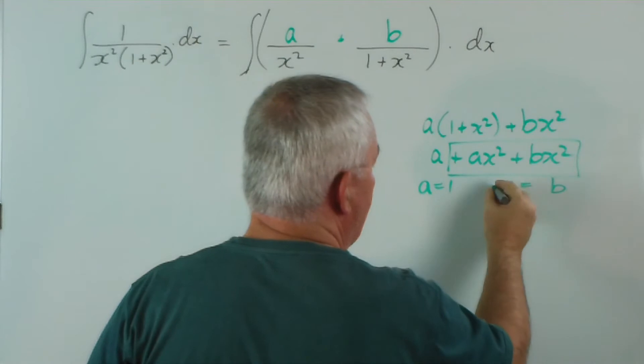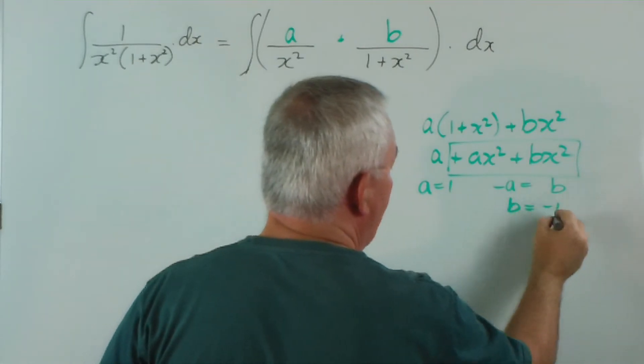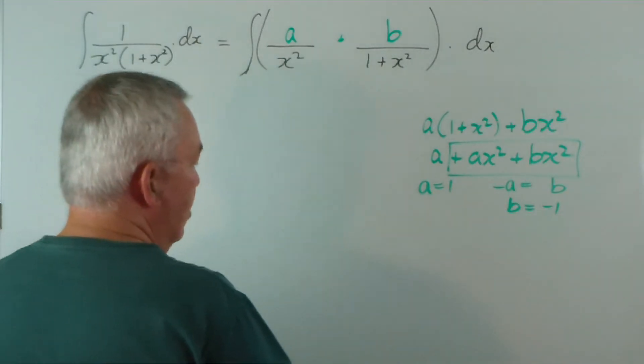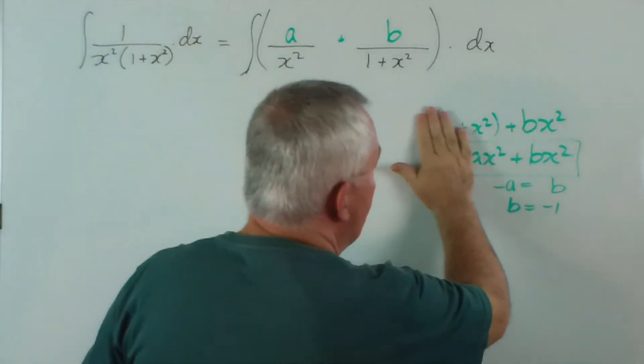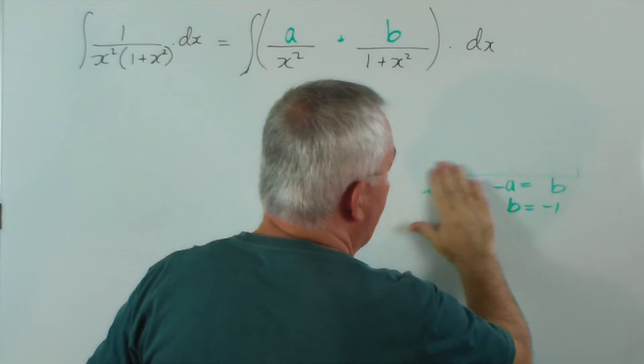Or if you like, b equals negative a. So b equals negative 1. Well, there we go. That makes life very, very easy. It was a quick analysis. And I hope you appreciated how simple that can be.